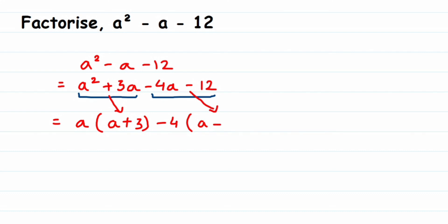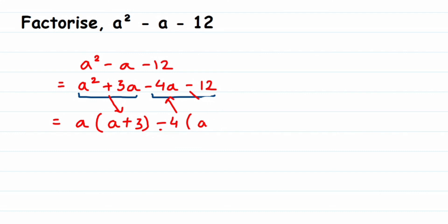This is important: when you take minus 4 outside, the sign inside must give back the original terms. Minus 4 times a gives minus 4a, and minus 4 times positive 3 gives minus 12, which matches. So the last group is minus 4 times a plus 3. Now both groups have a plus 3 as a common factor. Taking a plus 3 out, we get a plus 3 times a minus 4.